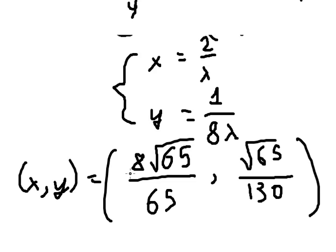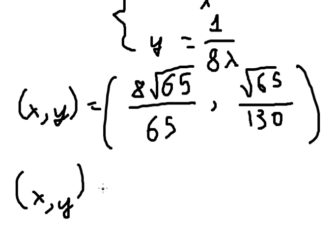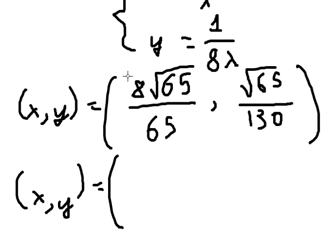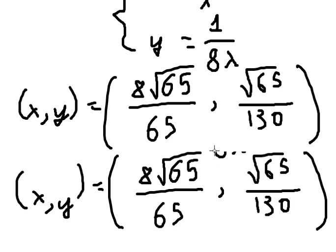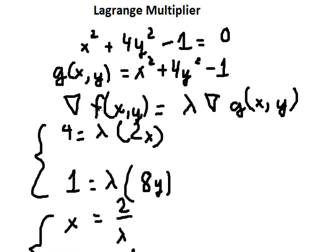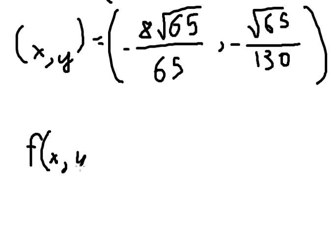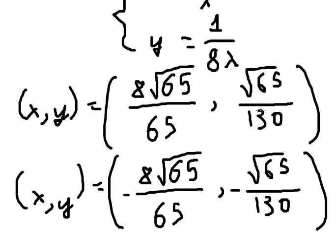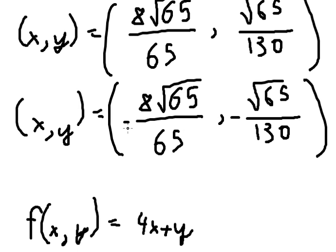After we have this solution, we can find the second one — it is the same but with negatives applied to both x and y. Then we go back and evaluate f(x,y) = x plus y. For the first solution both values are positive, so that gives the maximum; for the negative solution, that gives the minimum.